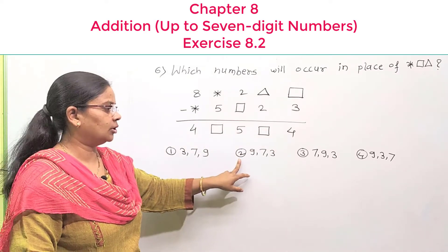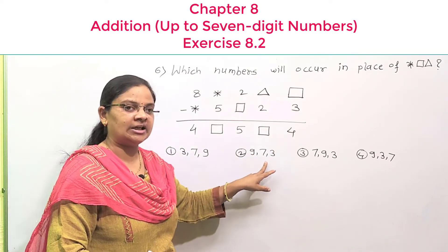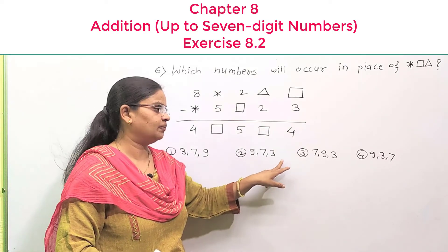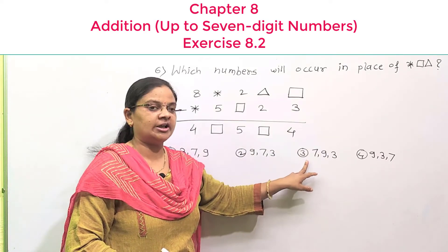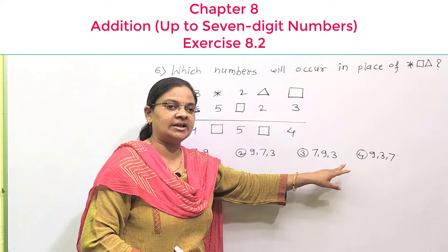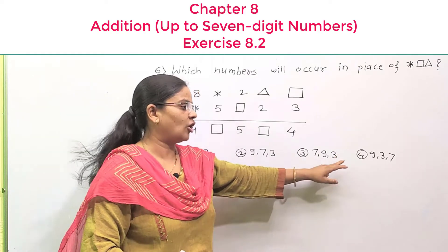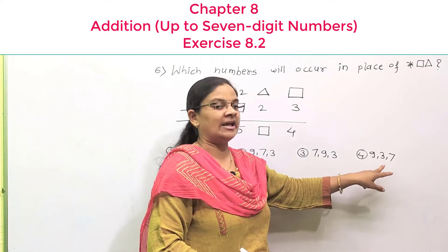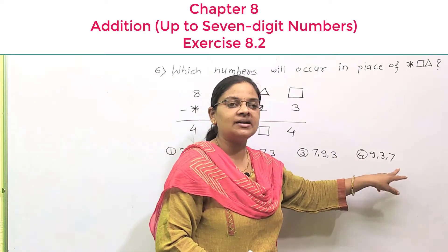Option number 2: 9, 7, 3. Option number 3: 7, 9, 3. And option number 4: 9, 3, 6.